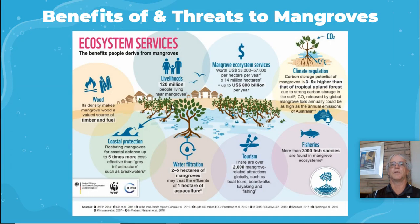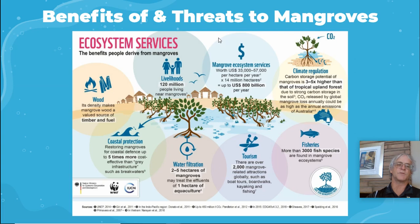Benefits and ecosystem services of mangroves include wood and livelihood — 120 million people live around them — with ecosystem services of up to $800 billion a year. Climate regulation: mangroves can take in three to five times as much CO2 as a tropical forest. Coast protection: they protect from tides and floods and are five times more cost-effective than hard infrastructure. Water infiltration allows water to go down into the groundwater. Tourism is also a benefit, with lots of fish, crabs, and clams.